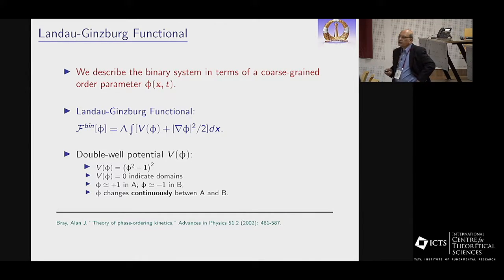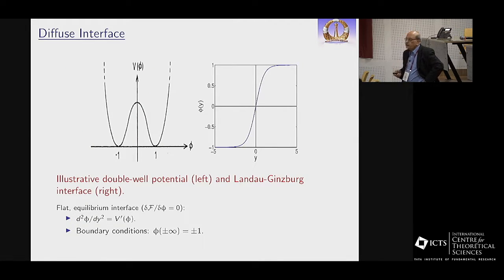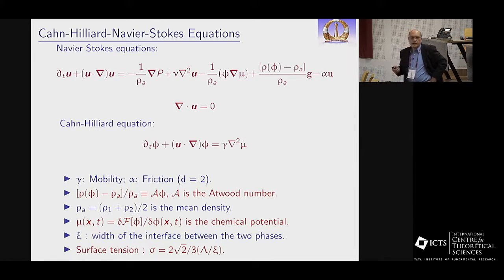Here is the Landau-Ginsberg functional with a coarse-grain order parameter φ that distinguishes between A-rich and B-rich phases. In the simplest case you take a double-well potential. There is an order parameter but there's also flow, so in addition to φ there is a velocity field. The top equation is the Navier-Stokes equation up until here, where ν is the kinematic viscosity, and then there are terms which have to do with this order parameter φ.